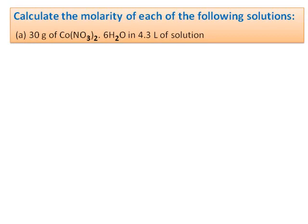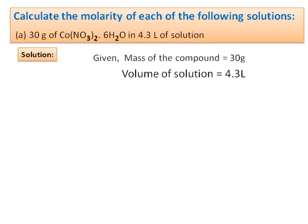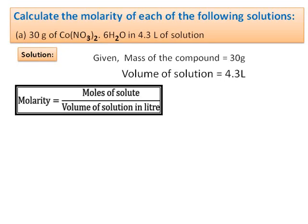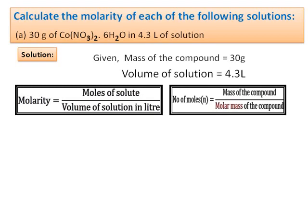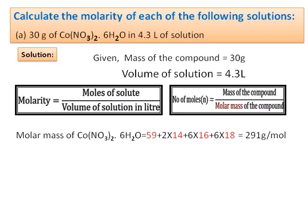For problem one: given mass = 30 g, volume = 4.3 L. Calculate molarity. The moles of solute must be found from mass divided by molar mass. The molar mass of cobalt(II) nitrate hexahydrate: 59 + 2×14 + 6×16 + 6×18 = 291 g/mol. Moles = 30 g ÷ 291 g/mol = 0.103 mol.